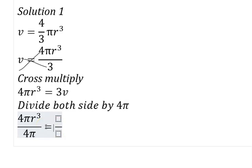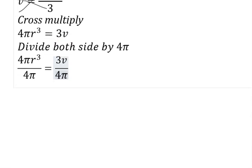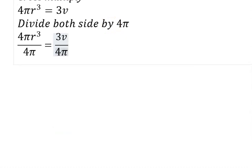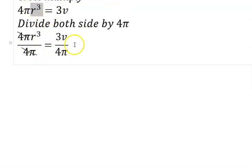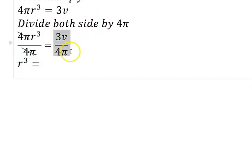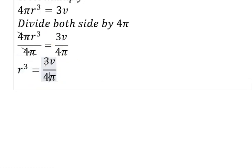We divide both sides by 4π. On the left side we have 4πR³ divided by 4π, and on the right side we have 3V divided by 4π. The 4π cancels on the left side, and we now have R³ equals 3V over 4π.